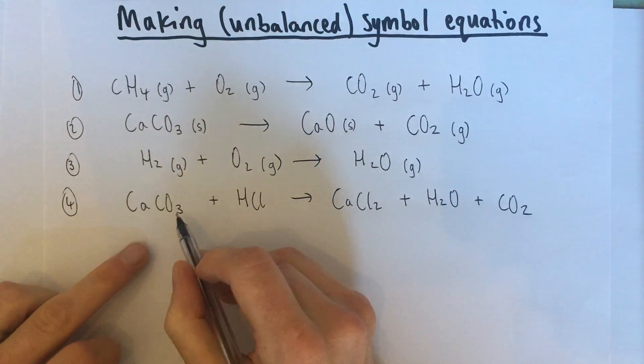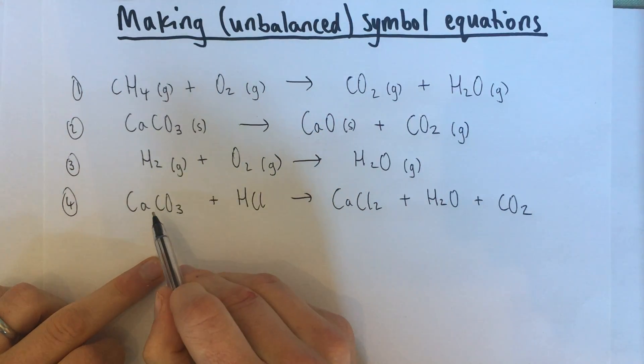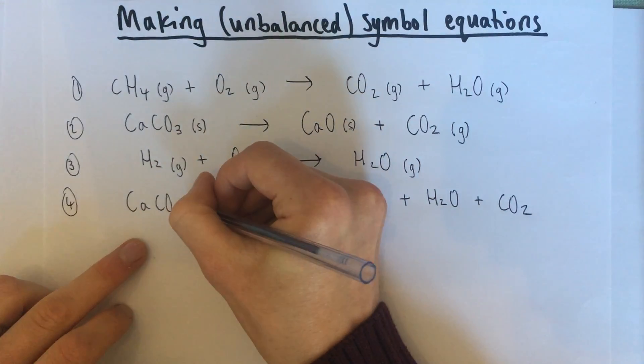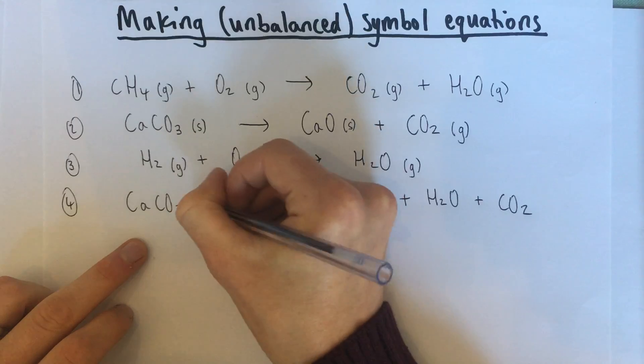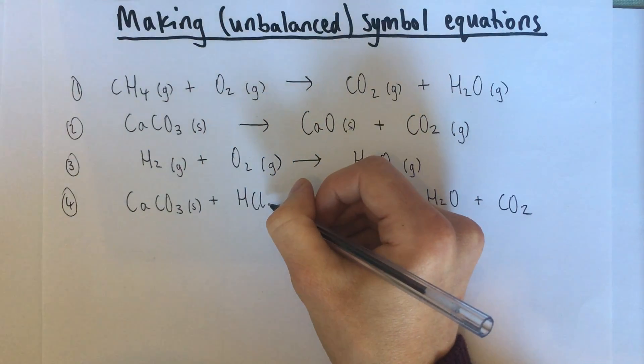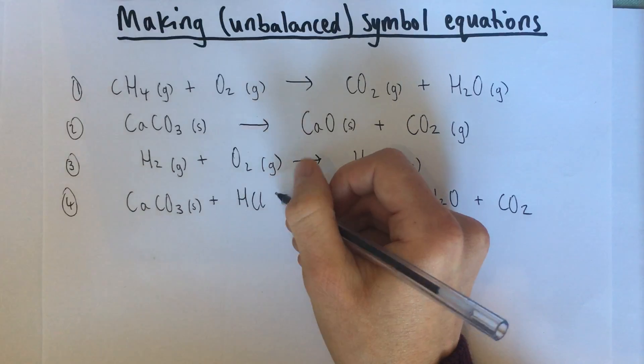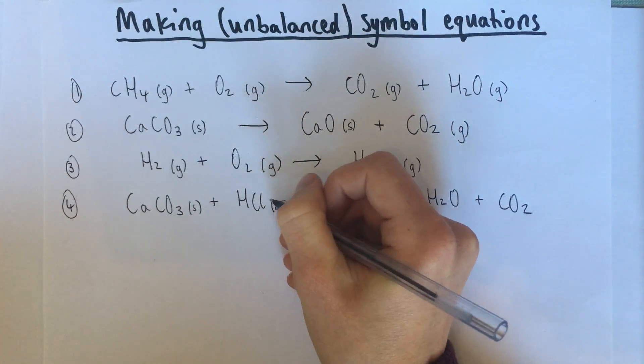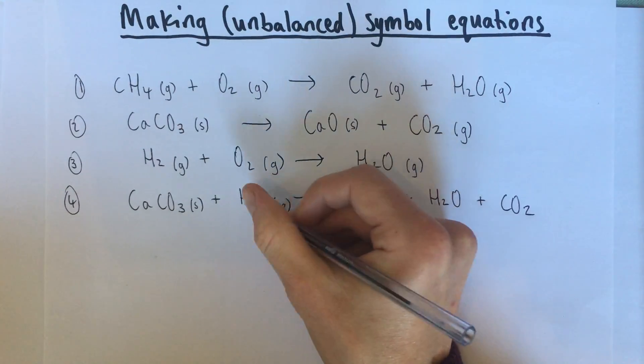One that's a little bit more interesting now is if we reacted marble with hydrochloric acid. Marble, calcium carbonate is a solid. Hydrochloric acid. If that was pure, we might put liquid, but we always use watered down hydrochloric acid. It's a lot safer. So that's going to be AQ.